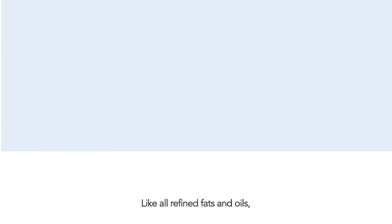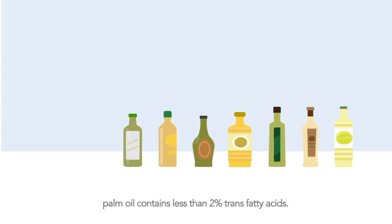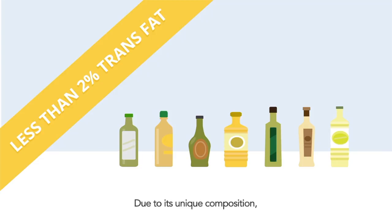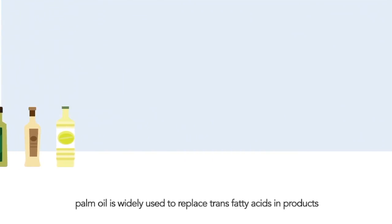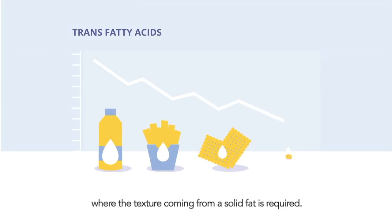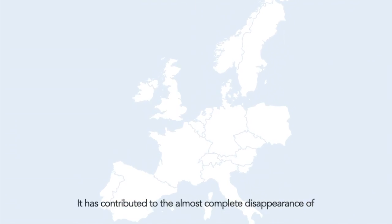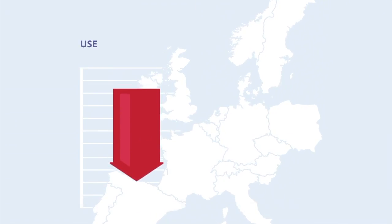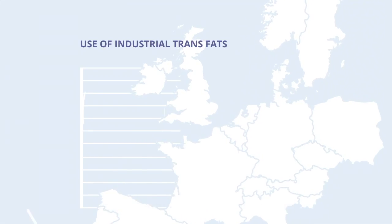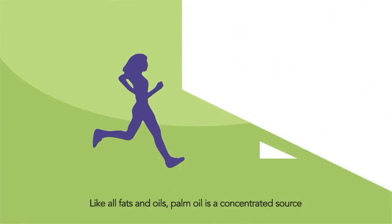Like all refined fats and oils, palm oil contains less than 2% trans fatty acids. Due to its unique composition, palm oil is widely used to replace trans fatty acids in products where the texture coming from a solid fat is required. It has contributed to the almost complete disappearance of industrial trans fats, specifically in Western Europe.